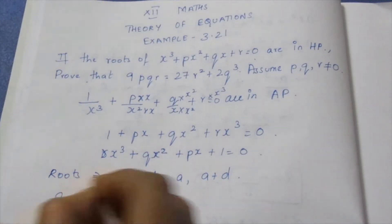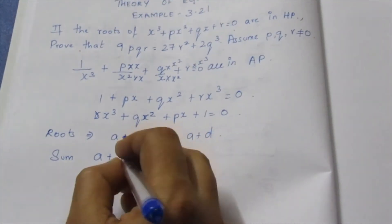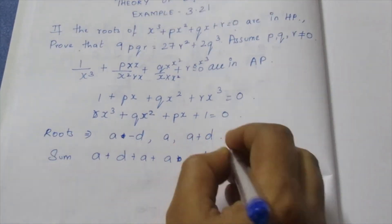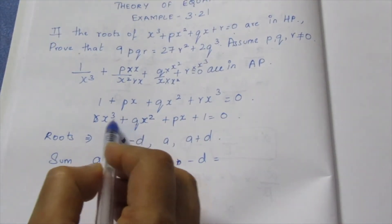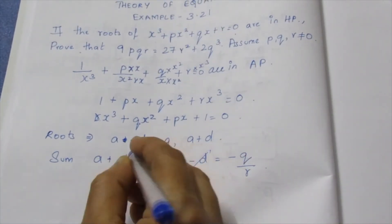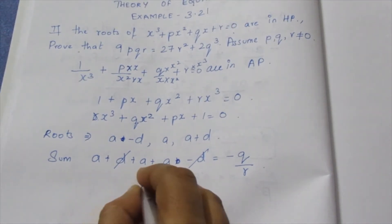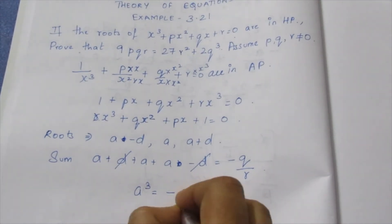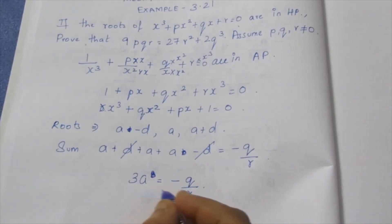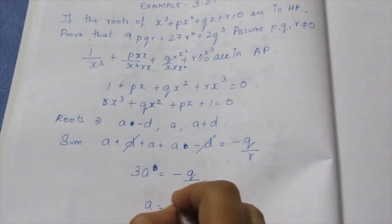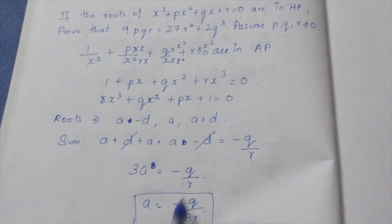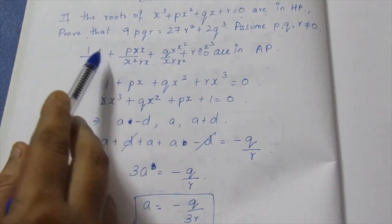Sum of roots: (a-d) + a + (a+d) = -q/r. So 3a = -q/r, which gives a = -q/3r. This value a is one of the roots of the equation.